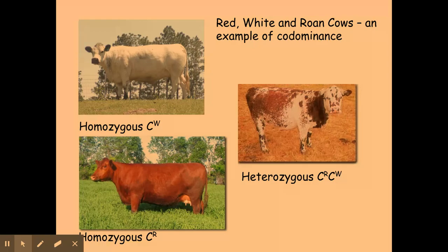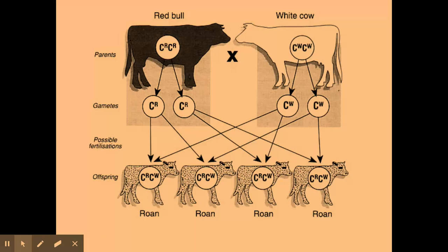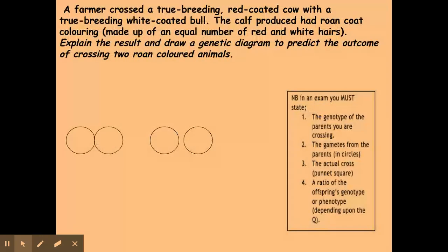The next example looks at red, white, and roan cattle. A red cow crossed with a white cow, where both colours are expressed simultaneously, gives roan cattle. We'll look at an example of a cross and display it in terms of a Punnett square.